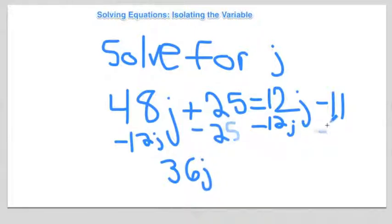And then to get j by itself, you just divide both sides by 36, so you get j is equal to negative 1.